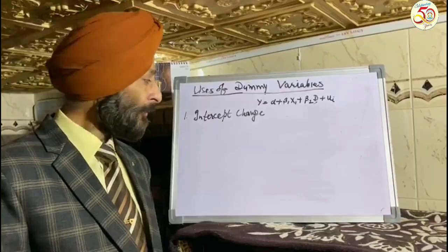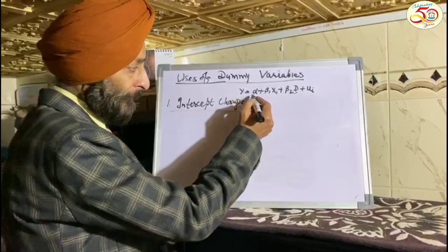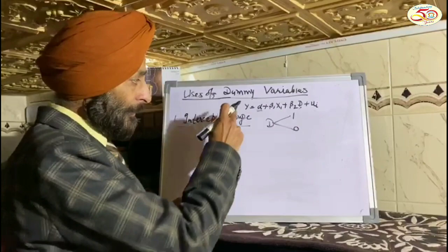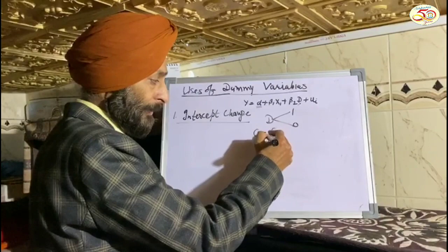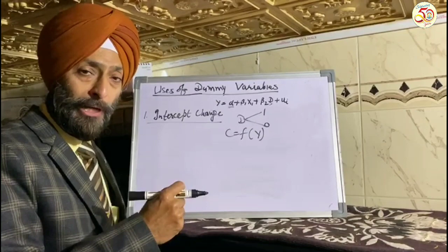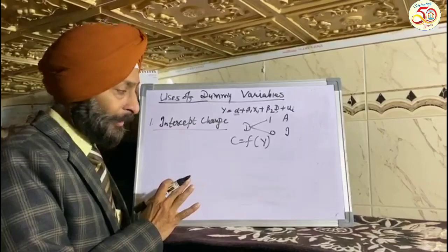Let us start with the uses of dummy variable. Dummy variable can be used in different contexts. The first use is to present the change in intercept value. In this model, alpha is our intercept, and the dummy variable can be assigned value 1 or 0. Let us say that consumption (Y) is a function of income, and the dummy variable shows whether the citizen is American or Indian. We allot 1 for American and 0 for Indian.